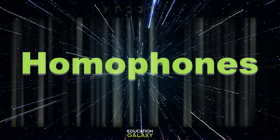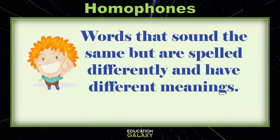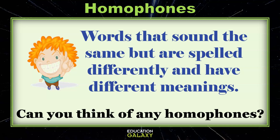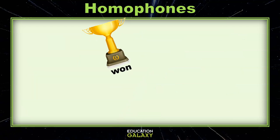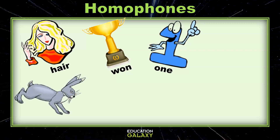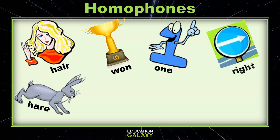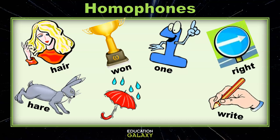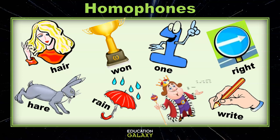Let's talk about homophones. What are homophones? Homophones are words that sound the same but are spelled differently and have different meanings. Can you think of any homophones? Did you think about 'one' and 'won,' or maybe 'hair' and 'hare,' or 'right' and 'write,' or maybe even 'rain' and 'reign'? As you can tell, homophones sound the exact same but they are spelled differently, and as you can tell from the pictures, they have very different meanings.